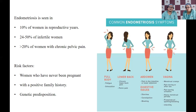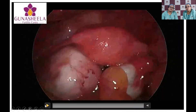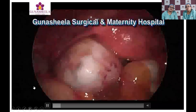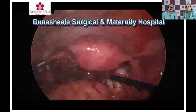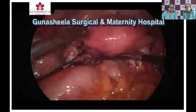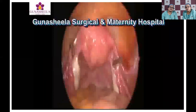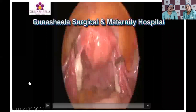This is a laparoscopic picture showing endometriosis in a woman's pelvis — this is a surgery performed to clear out the endometriosis. Here you can see the uterus, and this is how a normal uterus with its fallopian tubes and ovaries should look, with the ovaries being quite small.